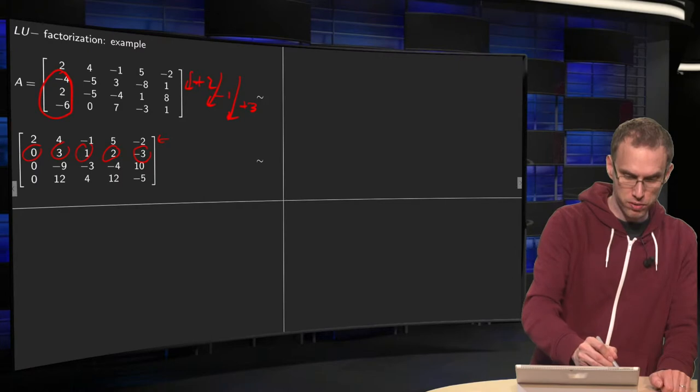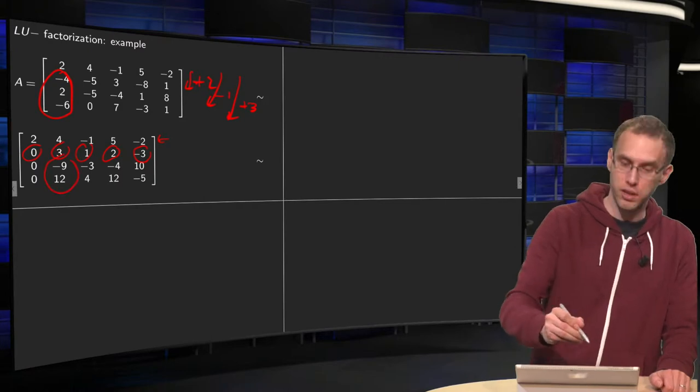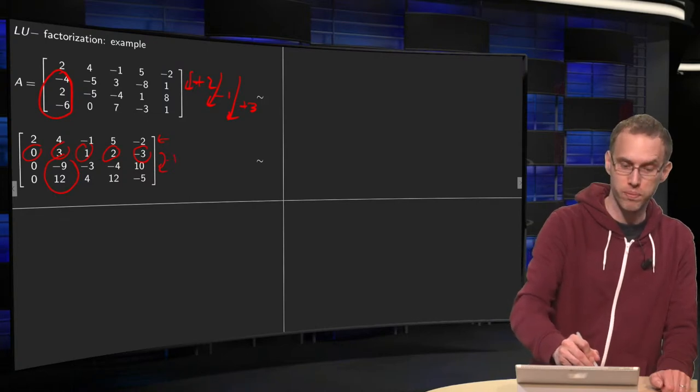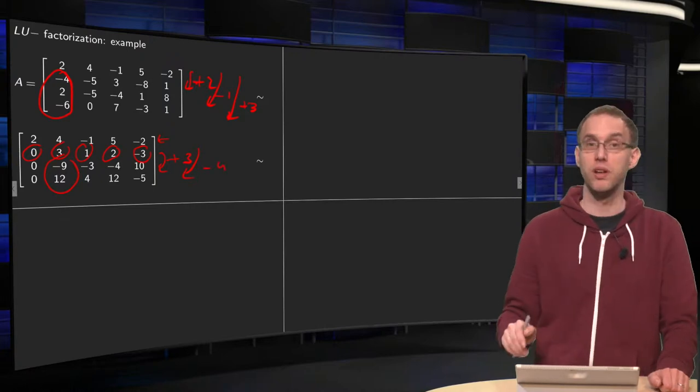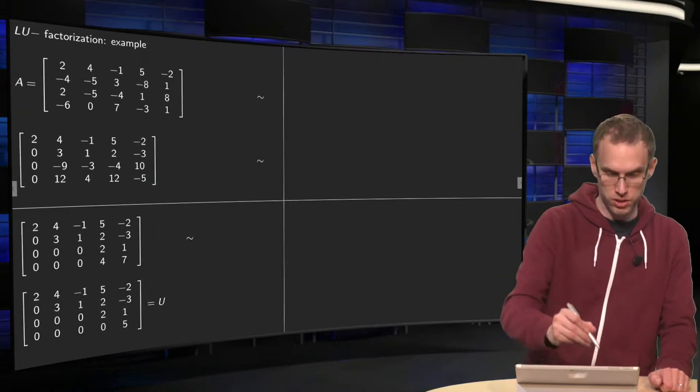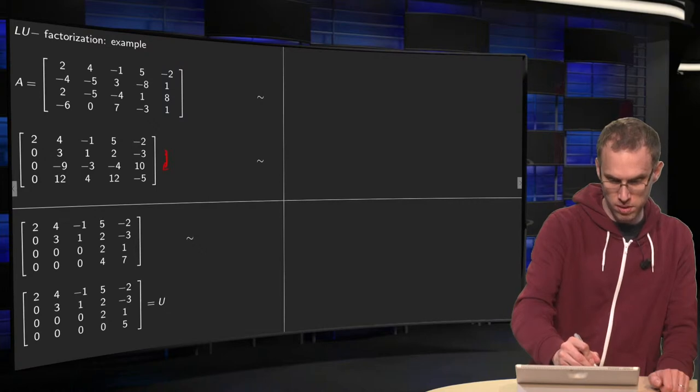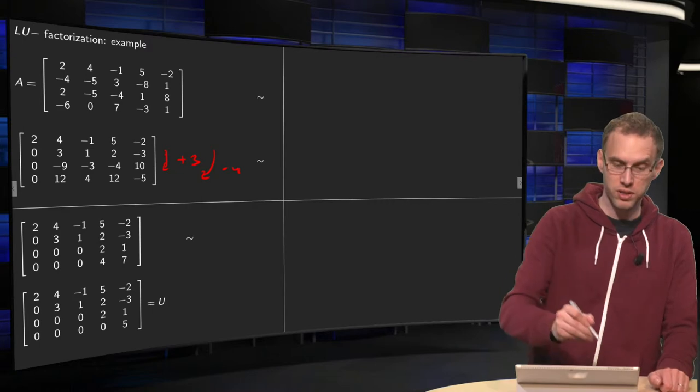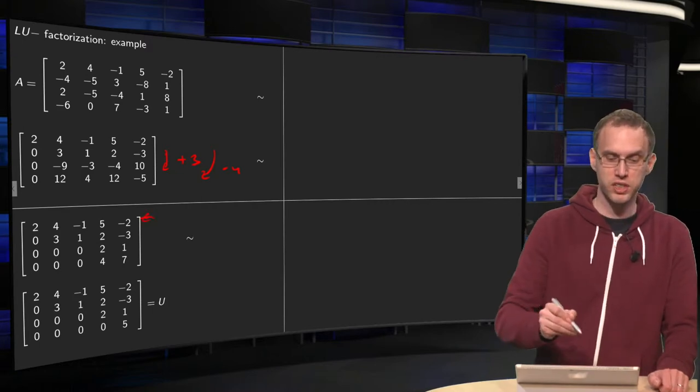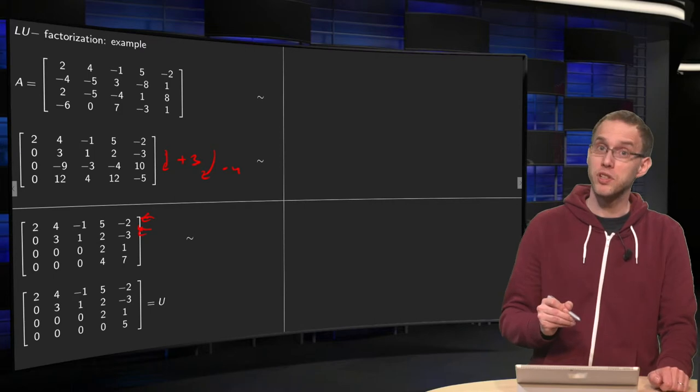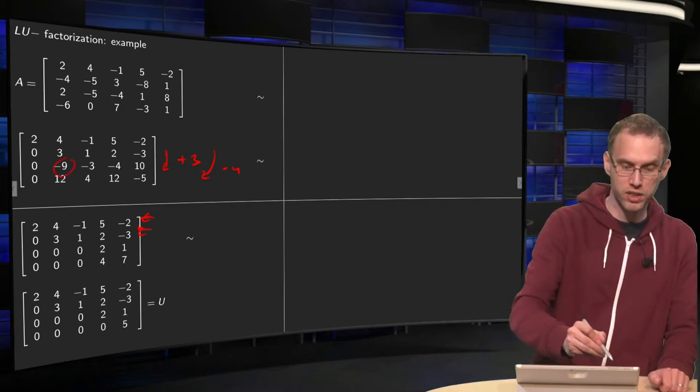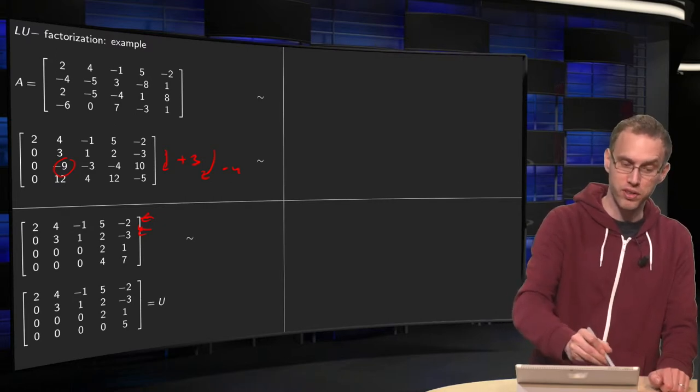Then we continue. We want to make zeros here. That means we have to add the second row twice to the third row and add the second row -4 times to the last row. The first row doesn't change. The second row doesn't change. We add 3 times 3 to -9, which gives us a zero. We add 3 times 1 to -3, which gives us another zero.